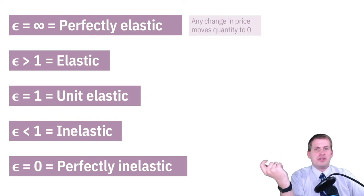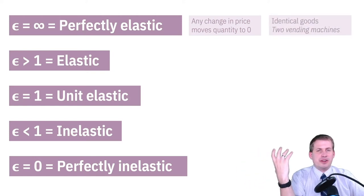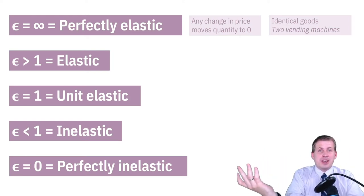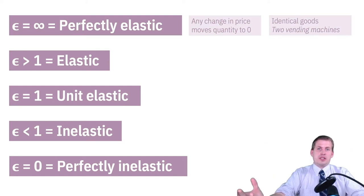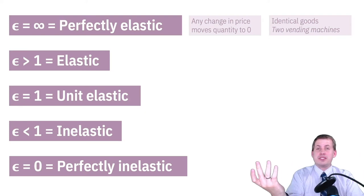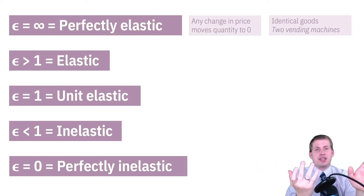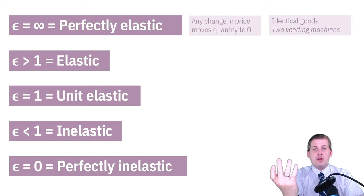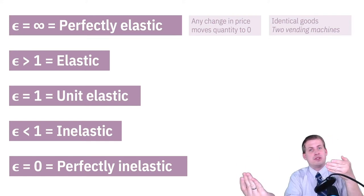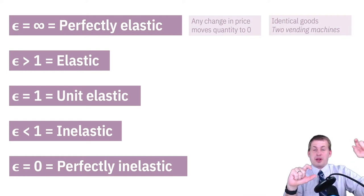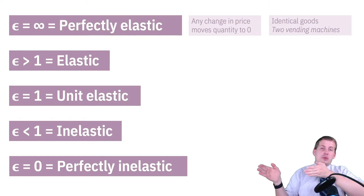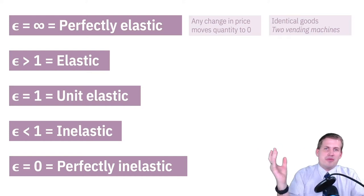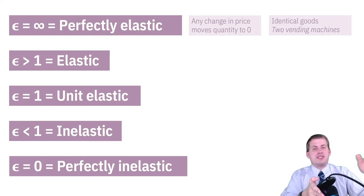Perfectly elastic goods don't really happen in real life very often. The best example is if you have two identical goods and the price of one changes. Imagine two vending machines in a hallway, both selling cans of Coke for 50 cents. Then whoever runs the second vending machine raises the price to a dollar. Nobody is going to buy the one-dollar Coke — everybody's going to go to the 50-cent one. That's where you raise the price just a little and everybody moves away from it.